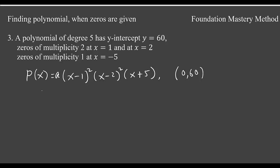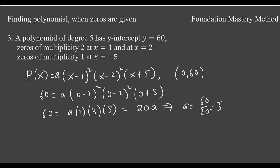So let us plug this point. So y is 60 and then my x will be 0, (0 minus 1) squared, (0 minus 2) squared, (0 plus 5). Now if you simplify you get 60 equals a and then you get 1, you got a 4, you got a 5. So that means you have 20a, that means a is 60 over 20 which is 3. So then our polynomial looks like now f(x) is 3 times (x minus 1) squared (x minus 2) squared and then (x plus 5).